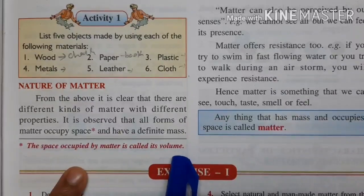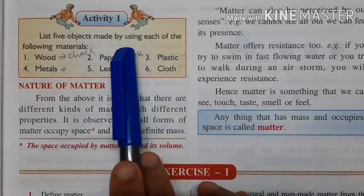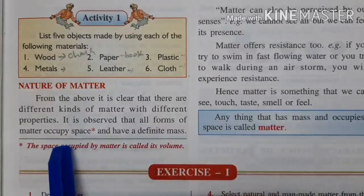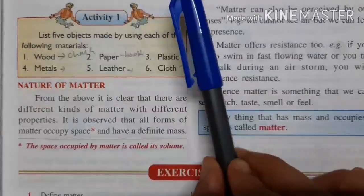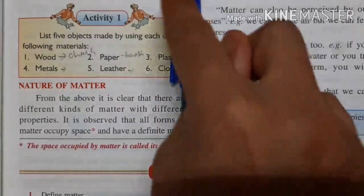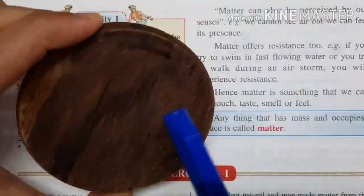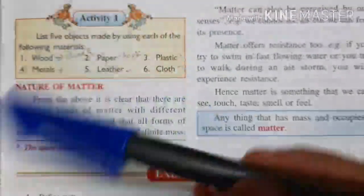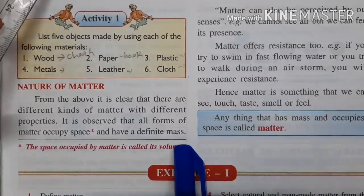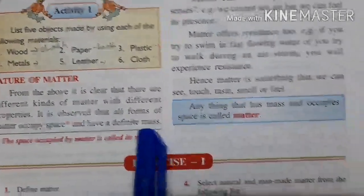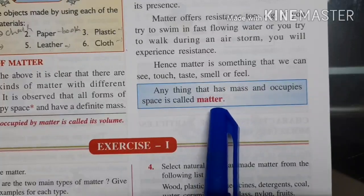All objects, all materials, all matter occupy space and have a finite mass. This pan I keep here occupies this much space and also has a mass. The scale also has a mass. So all these things have a mass. In short, anything that has a mass and occupies space is called matter.